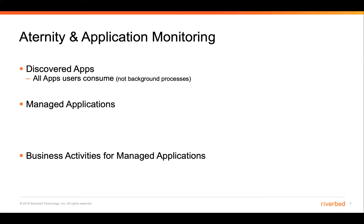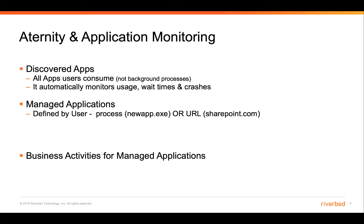For discovered apps, these are any applications that a user consumes and that they directly interact with. We automatically monitor the usage of those applications, their wait times, and any crashes that occur. Managed applications are ones that you specifically define, and you can do that via defining Eternity to monitor a specific process or executable, or for a specific URL. In addition, you can add background processes — for example, security software that's running on your machine.